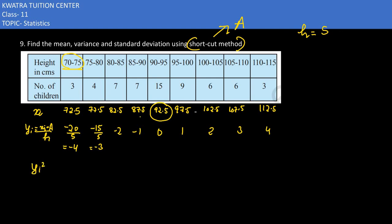Now for y_i squared: minus 4 squared is 16, minus 3 squared is 9, minus 2 squared is 4, minus 1 squared is 1, 0 squared is 0, 1 squared is 1, 2 squared is 4, 3 squared is 9, 4 squared is 16.